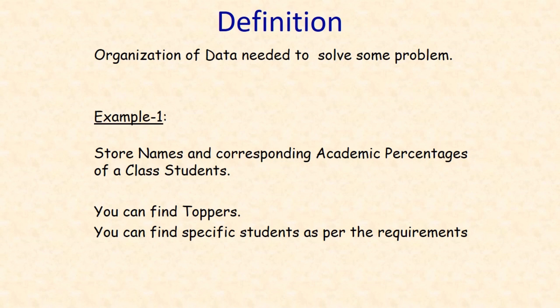So I have a requirement like this: I want to store names of students and their corresponding percentages. After storing that data in memory, if I want a topper, I will write some logic and whenever I apply that logic on that data, I will get the topper name. If I want some set of students — for example, students who have above 70% marks are eligible for placements — I can apply some logic on that data and get those details. So this is called a data structure.